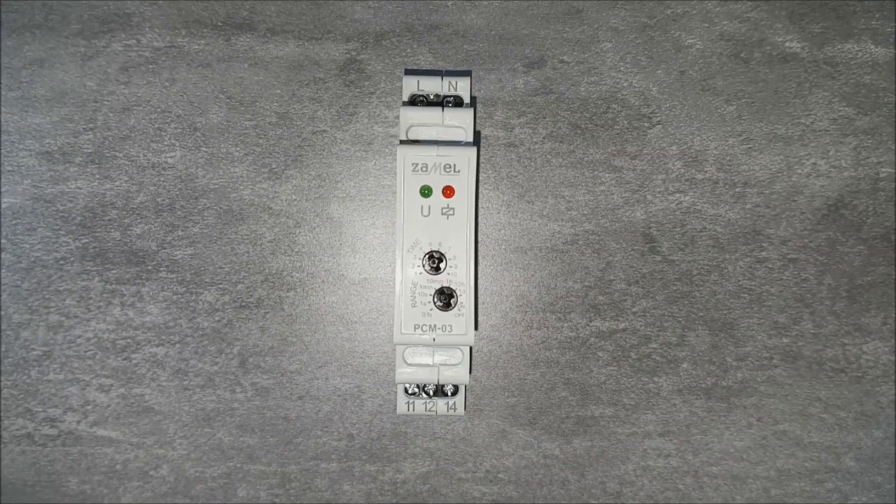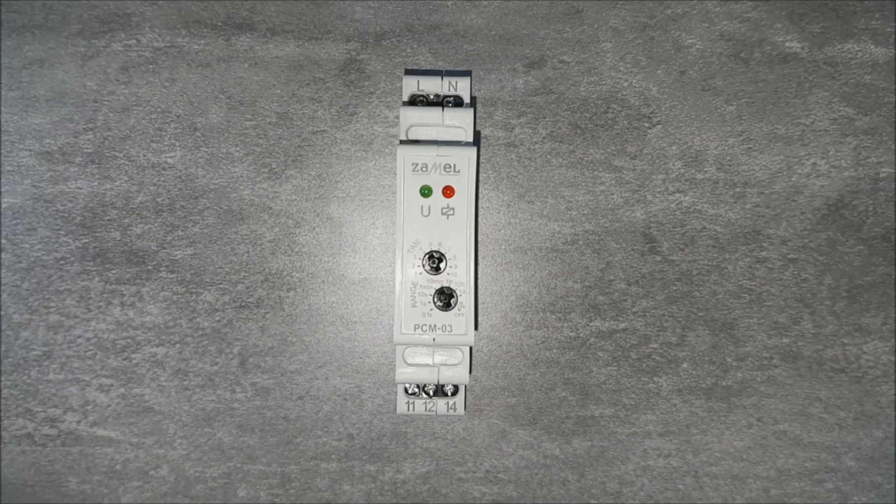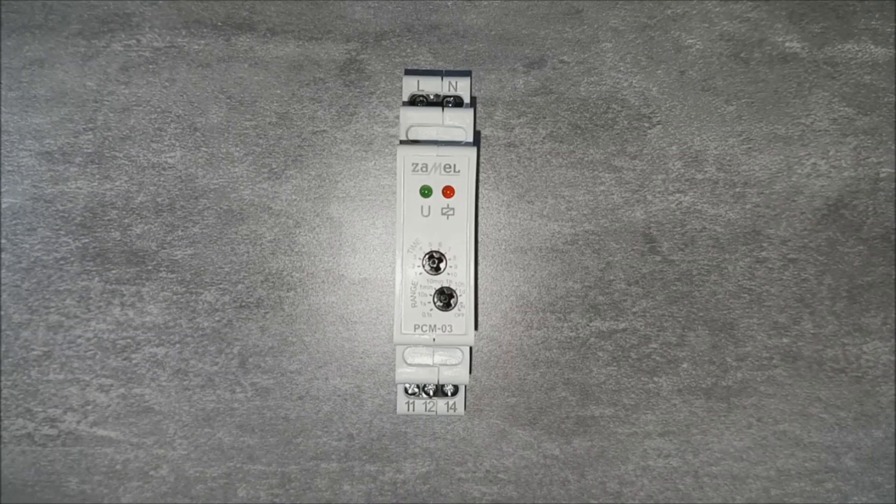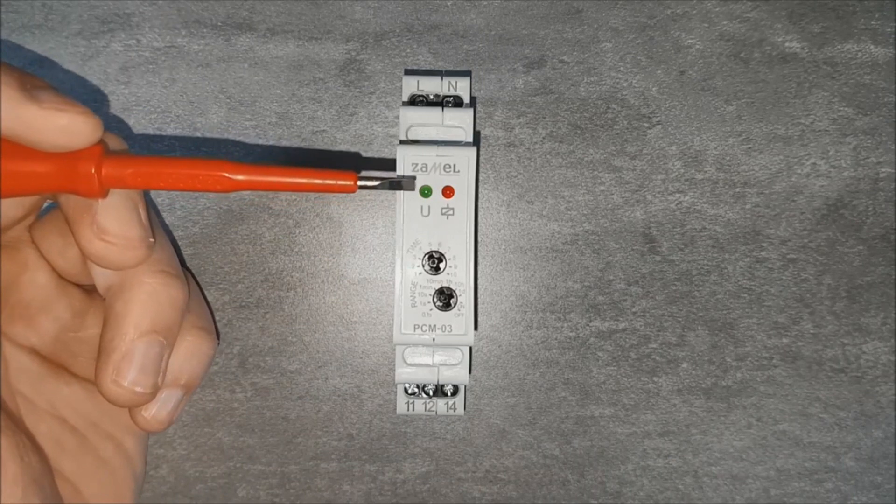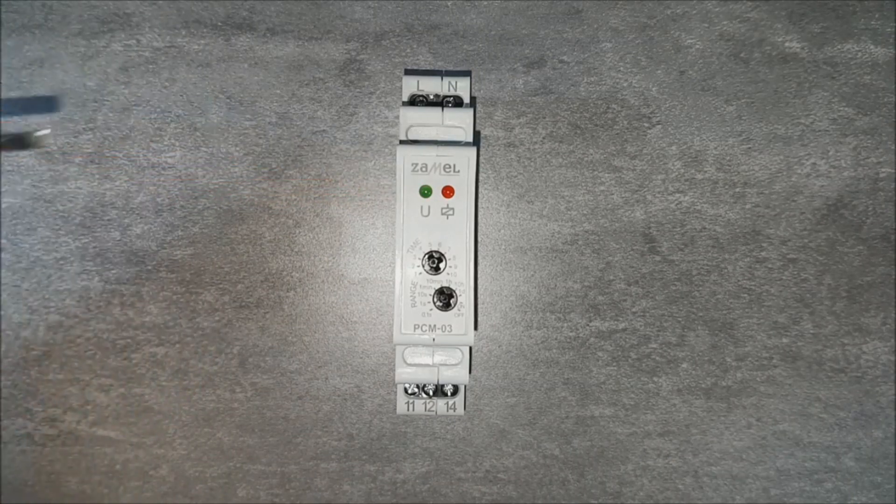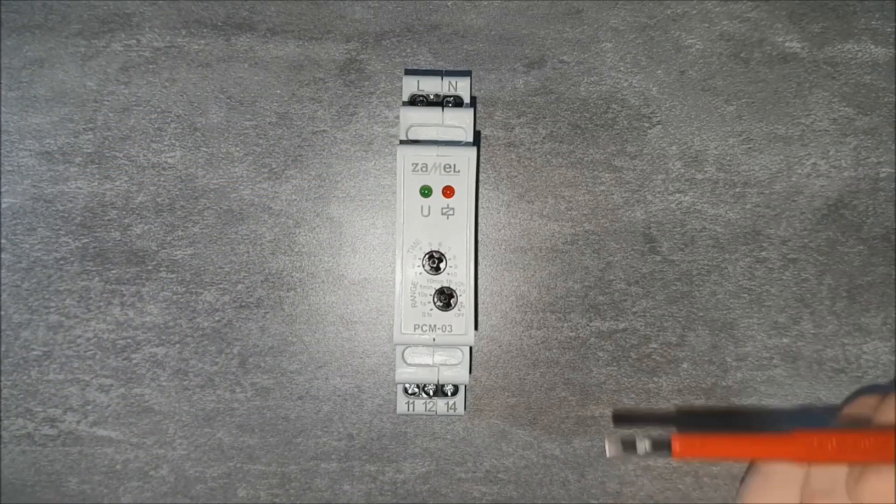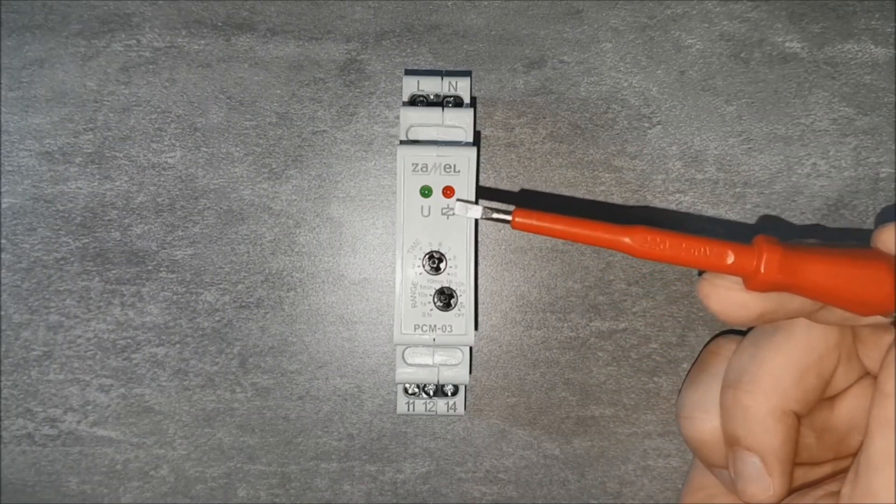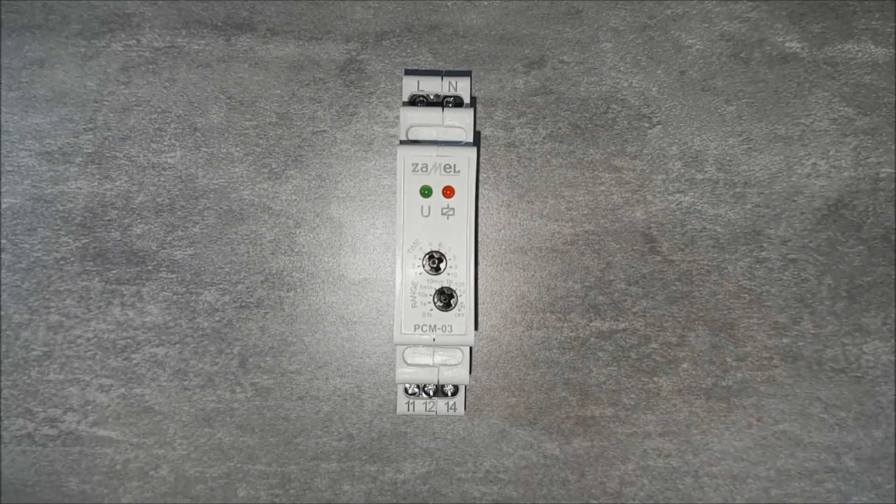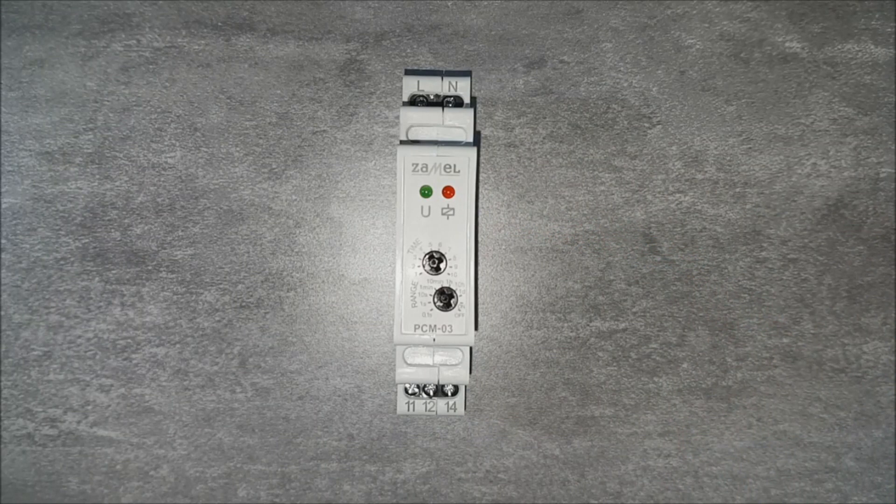There are following LEDs on the front panel. The green one indicates the supply voltage status. The red LED indicates the status of the relay. There are also two potentiometers.